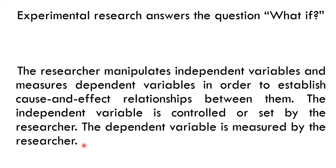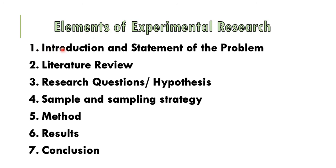Elements of experimental research: First is introduction and statement of the problem — the researcher introduces the rationale and problem statement. Next is literature review — focusing on previous experiments and their results. Then research questions and hypothesis — formulating null and alternative hypotheses. Next is sample and sampling strategy — the researcher specifies which sampling strategy will be used, such as purposive, random, or others.